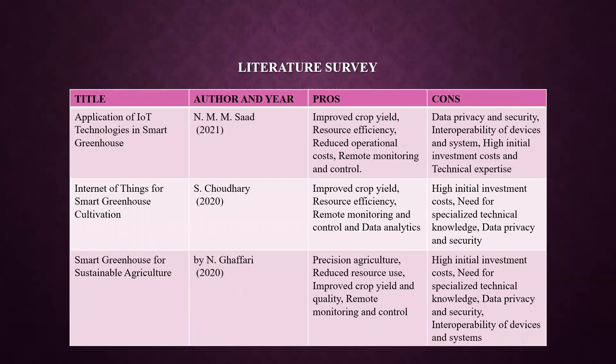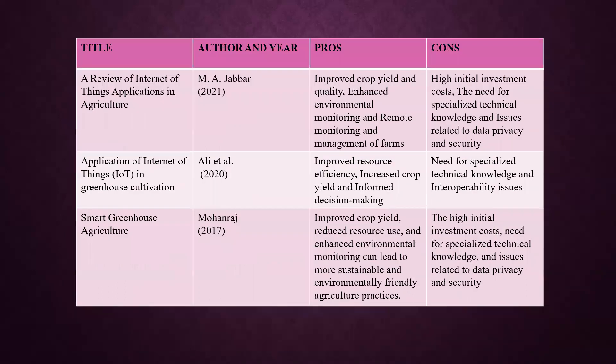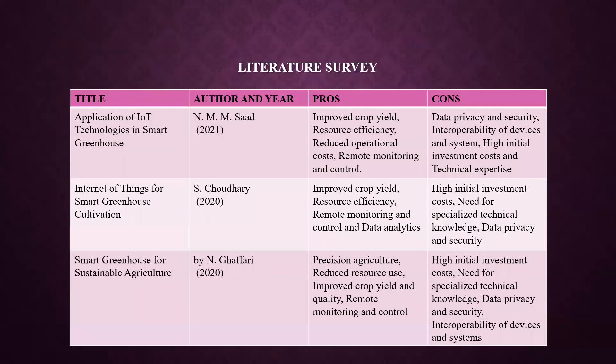These are some of the literature surveys used to compare and understand this topic. The titles include: Application of IoT Technologies in Smart Greenhouse, IoT Things for Smart Greenhouse Cultivation, Smart Greenhouse for Sustainable Agriculture, A Review of Internet of Things Application in Agriculture, Application of IoT in Greenhouse Cultivation, and Smart Greenhouse Agriculture. Every paper has both pros and cons.